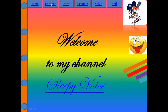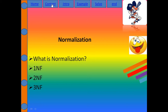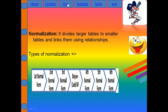Hello viewers, today's topic is database normalization. We'll discuss what normalization is and the three most important types: First NF, Second NF, and Third NF. There are actually many types — First, Second, Third, Boyce-Codd NF, Fourth, Fifth, and Sixth NF — but the first three are the most common and most widely used, so I'll describe those with examples.